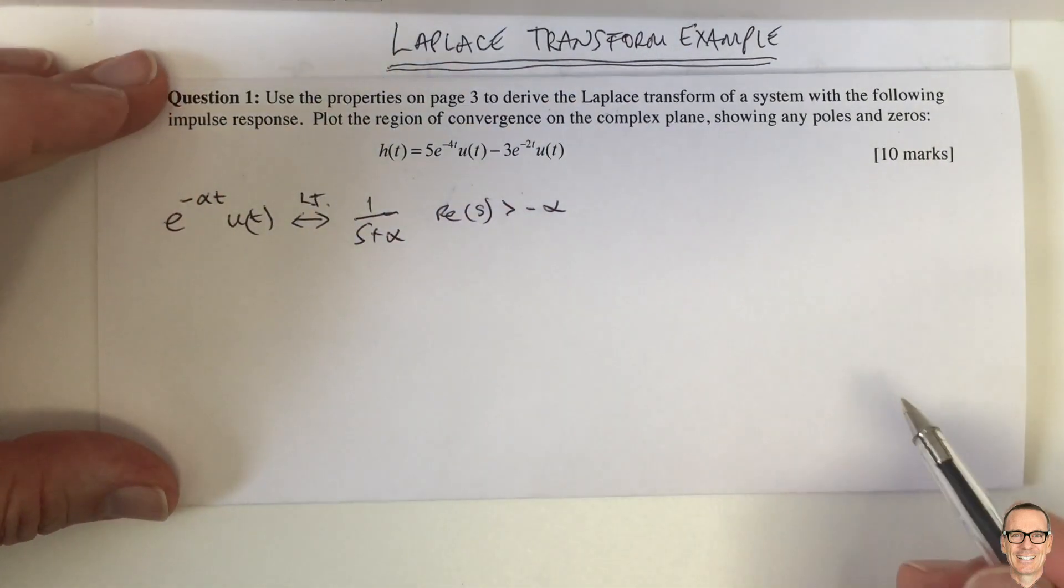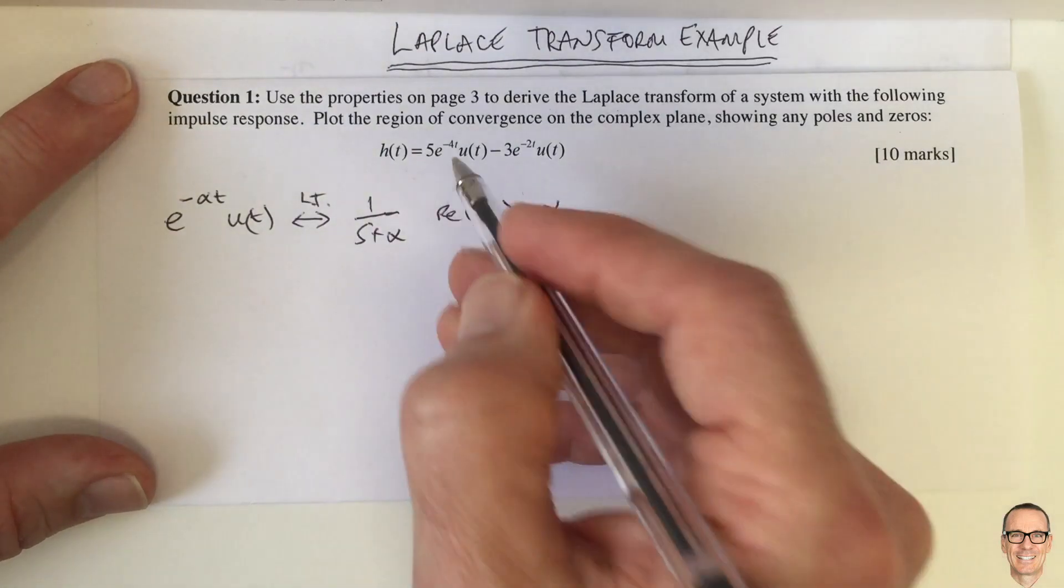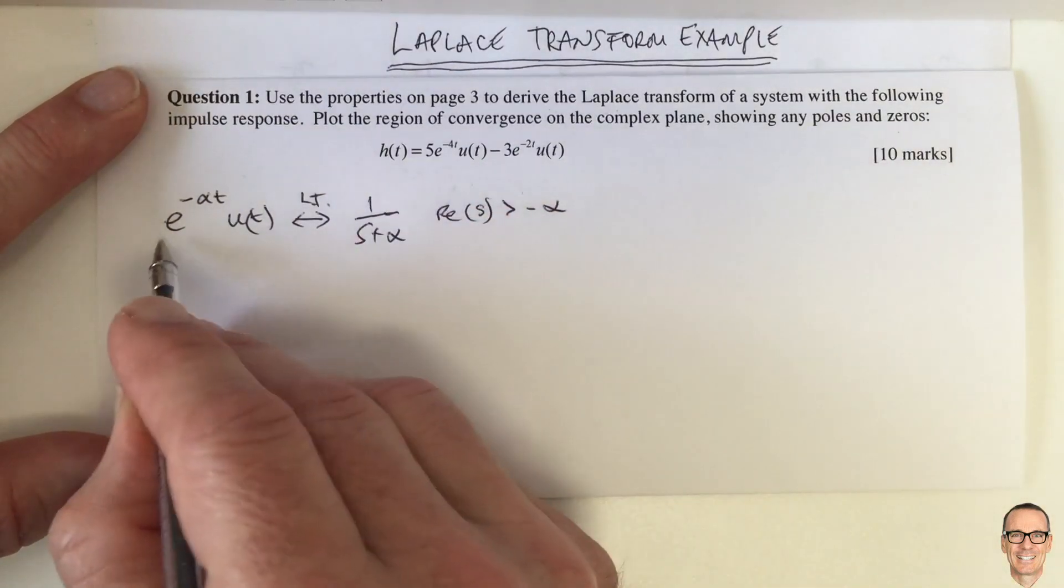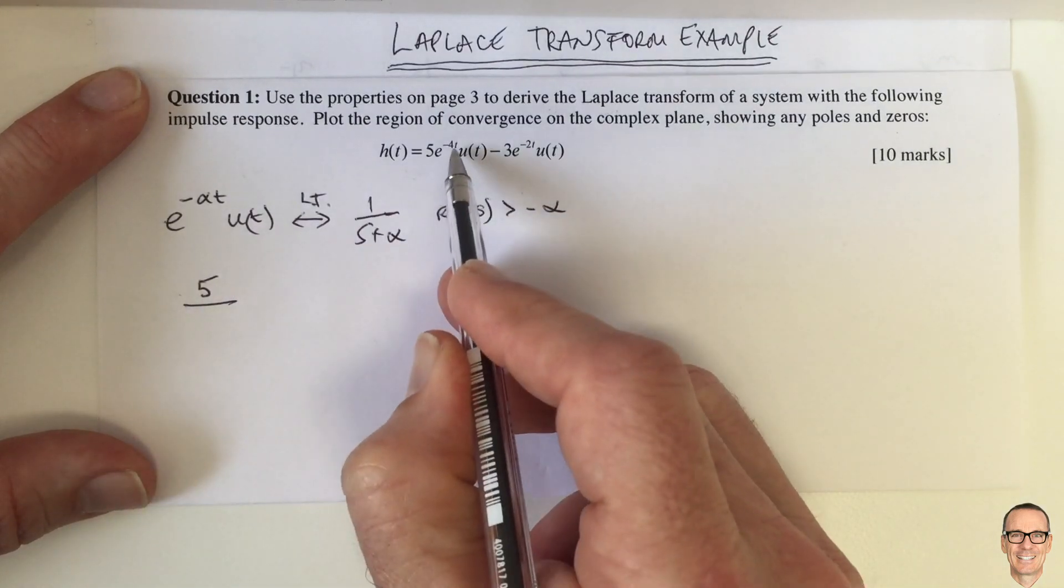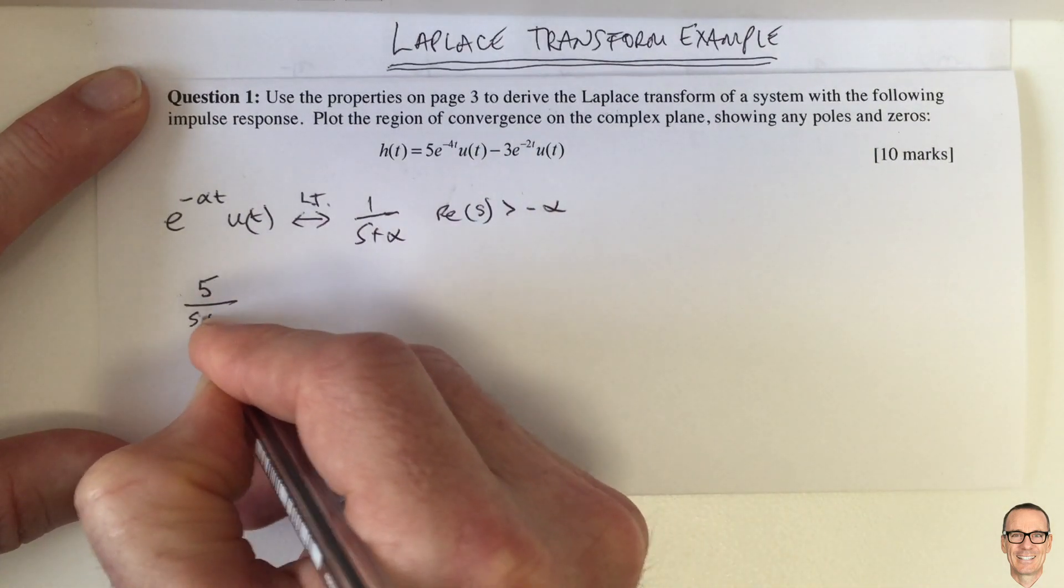So all we need to do is to write down the expressions for each of these two terms. So the first term, 5 is just a constant that multiplies out the front, so we have 5 divided by, what's alpha equals 4, so s plus 4.